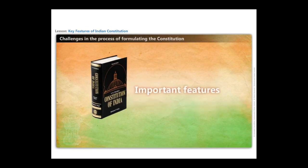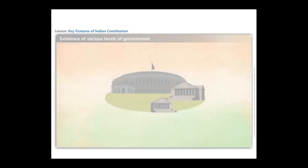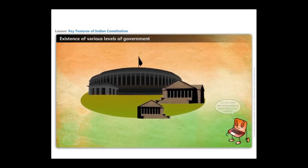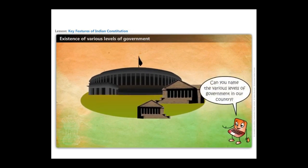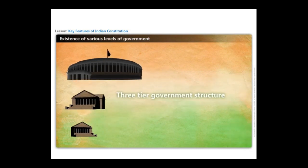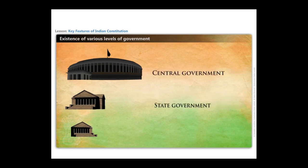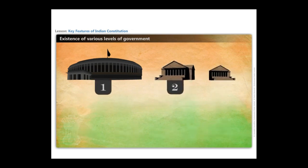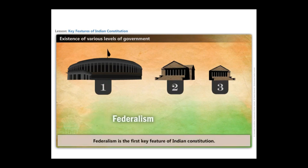Now let us look at the important features of our constitution. Recall the various levels of government in the country. In India, we have a three-tier government structure: central government, state government, and Panchayati Raj or local government. The existence of more than one level of government in the country is referred to as federalism. Federalism is the first key feature of the Indian constitution.